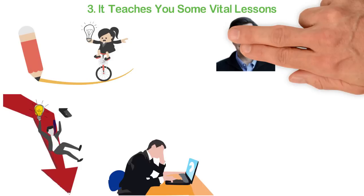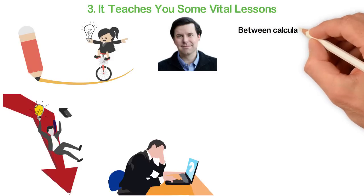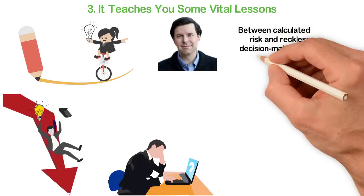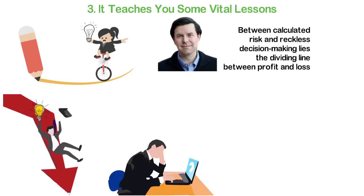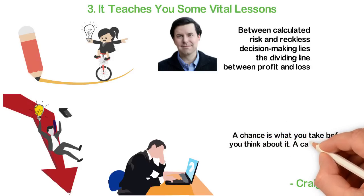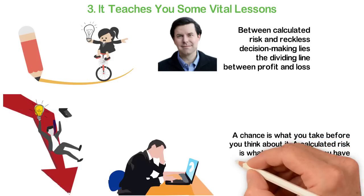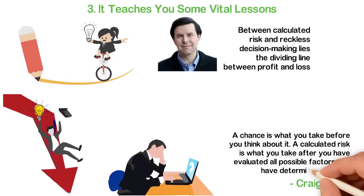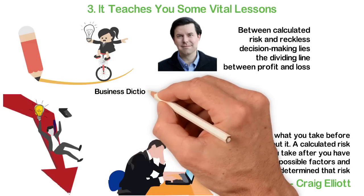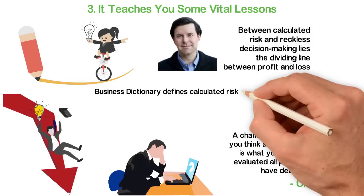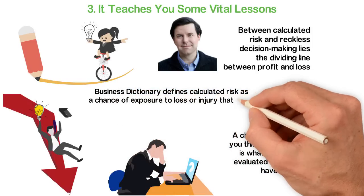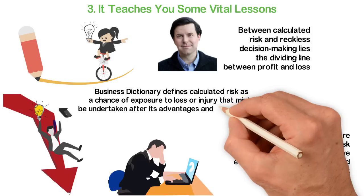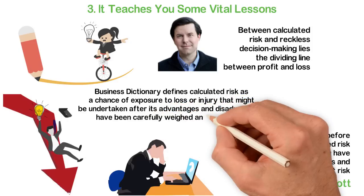Charles Duhigg, American journalist and author said, between calculated risk and reckless decision making lies the dividing line between profit and loss. Also, Craig Elliott, renowned illustrator and visual development artist said, a chance is what you take before you think about it. A calculated risk is what you take after you have evaluated all possible factors and have determined that risk. Business Dictionary defines calculated risk as a chance of exposure to loss or injury that might be undertaken after its advantages and disadvantages have been carefully weighed and considered.